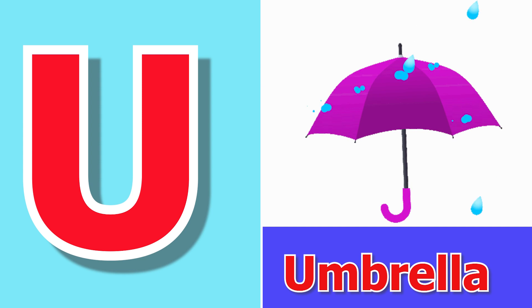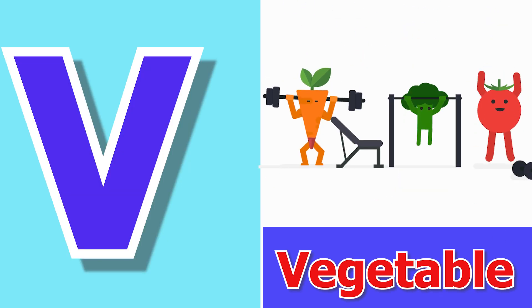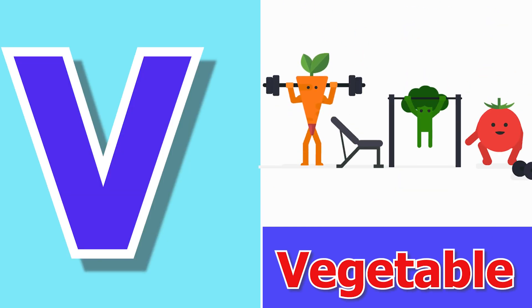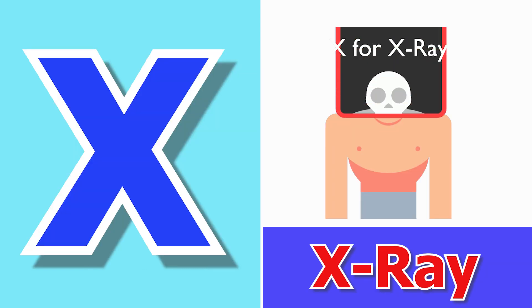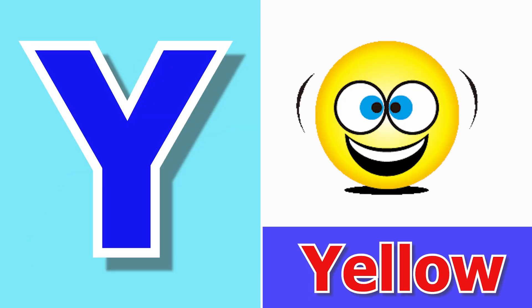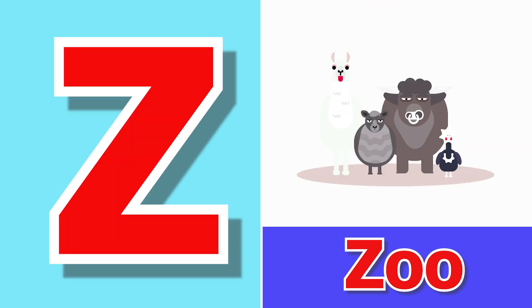U for Umbrella, V for Vegetable, W for Watch, X for X-Ray, Y for Yellow, Z for Zoo.